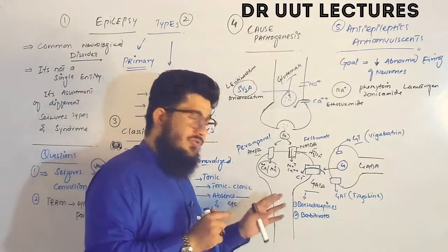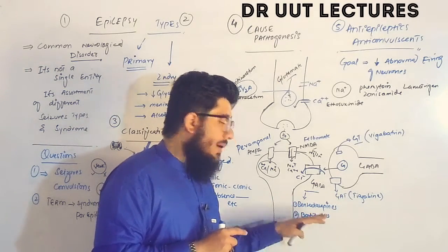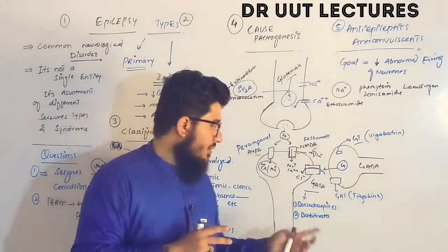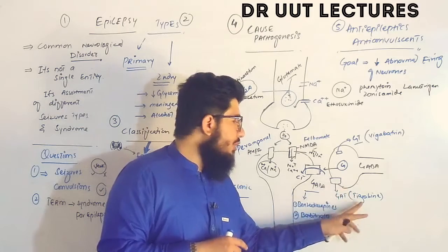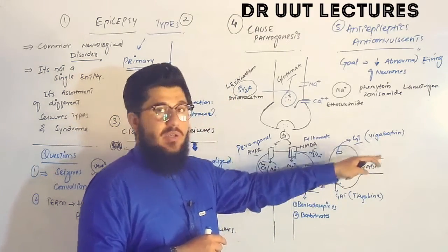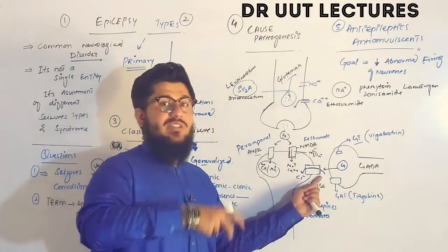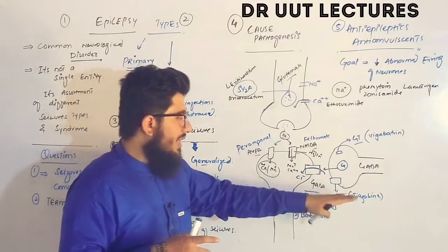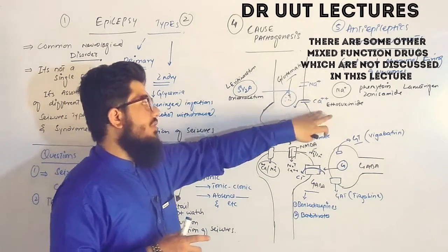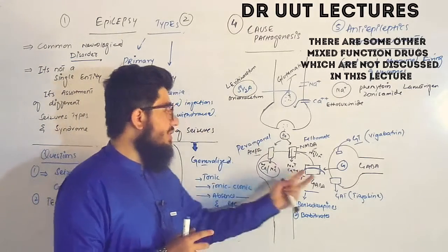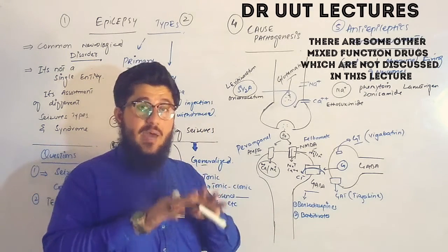Specific benzodiazepines used include clonazepam and diazepam. Barbiturates used include phenobarbital. To block the GAT (GABA transporter), tiagabine is used. To block the GABA transaminase enzyme, vigabatrin is used. In summary: we block the GAT, GABA transaminase, NMDA, AMPA, SV2A, sodium channels, and calcium channels — while we stimulate the GABA receptor — all to inhibit or decrease hyper neuronal activity.